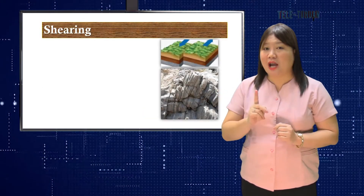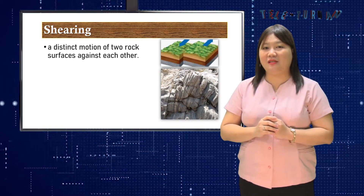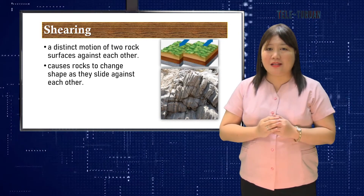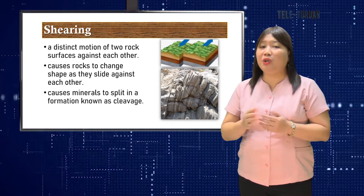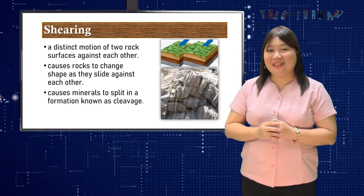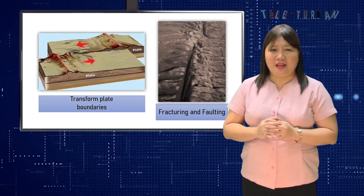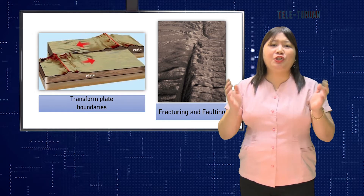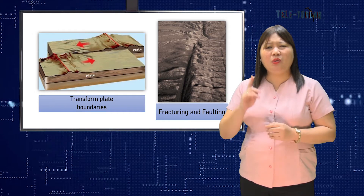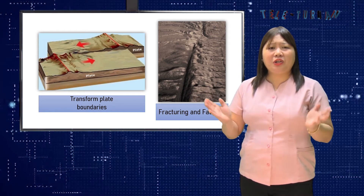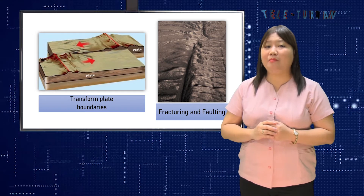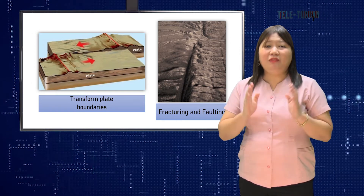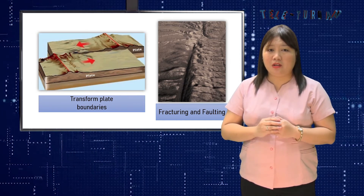Finally, the term shearing describes a distinct motion of two rock surfaces against each other. This third type of stress alters the rocks, causing them to change shape as they slide against each other. Shearing causes minerals to split in a formation known as cleavage. Under other circumstances, the rocks develop a pattern of parallel lines called schists. Shear stress occurs along the edges of tectonic plates, and is the most common stress at transform plate boundaries, most often taking place between 10 and 20 kilometers beneath the Earth's surface. If the same process occurred at the surface, it would result in fracturing and faulting.